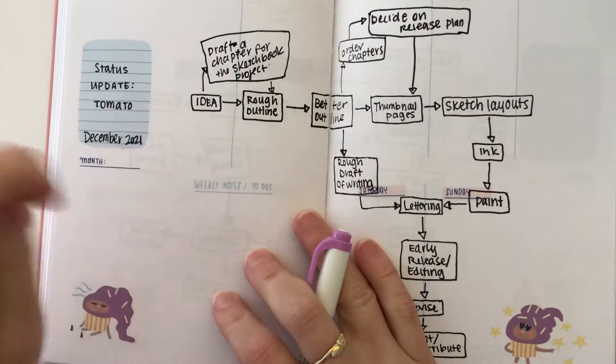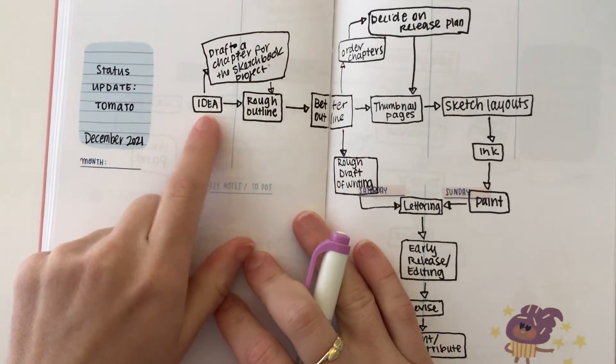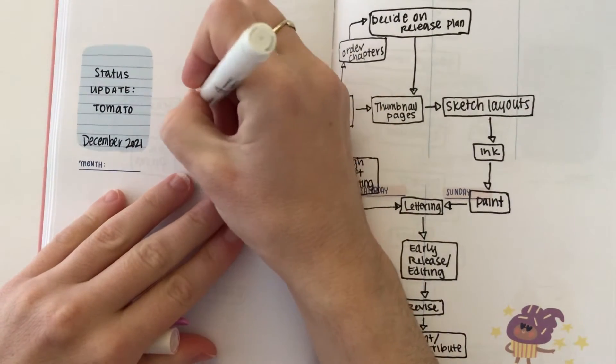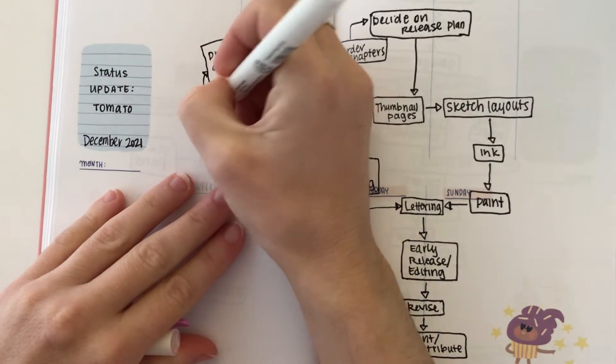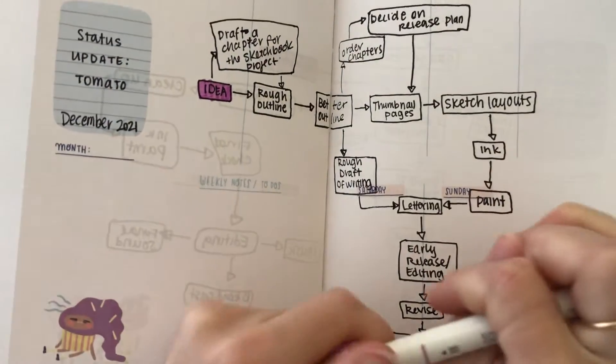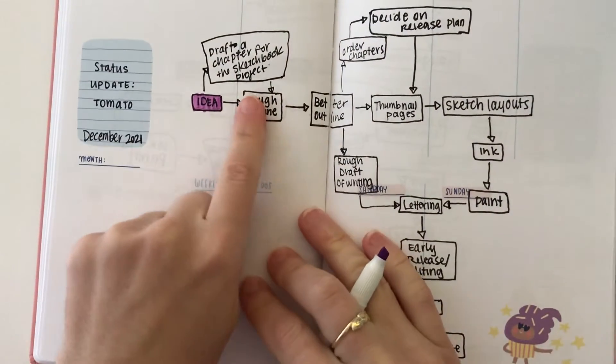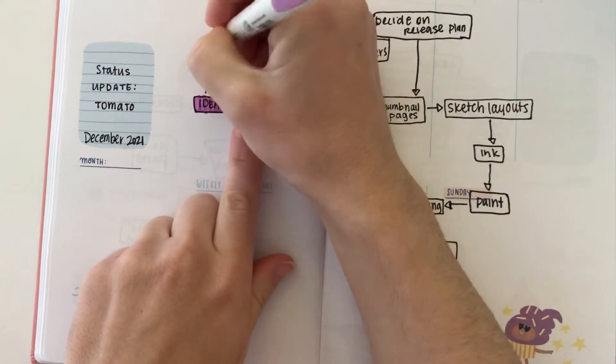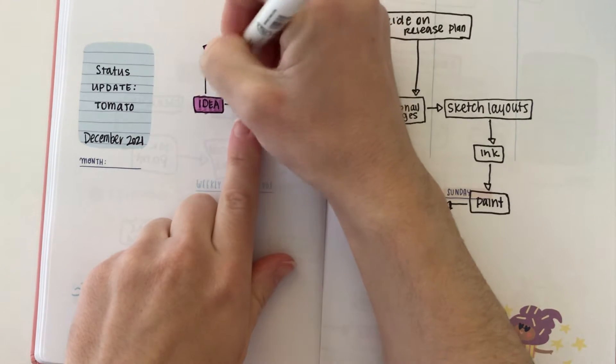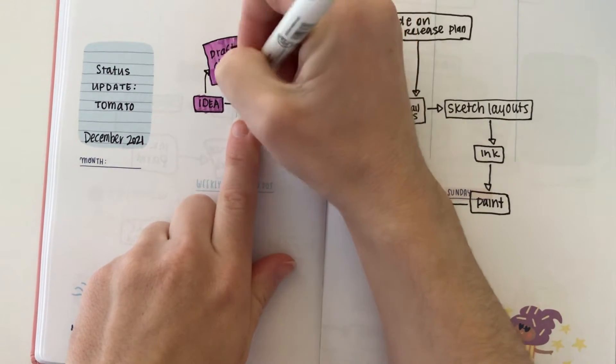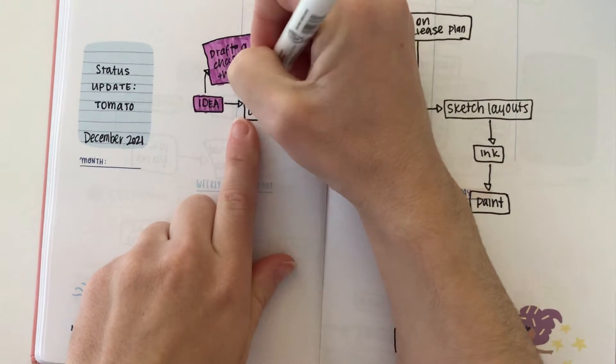So for this comic, you know, starting with the idea, I definitely have this in place. It's about a spirited tomato trying to make it in a difficult world. As I mentioned, I already did this where I drafted a chapter for the Brooklyn sketchbook project and it is over there in their library. Anyone can access it.